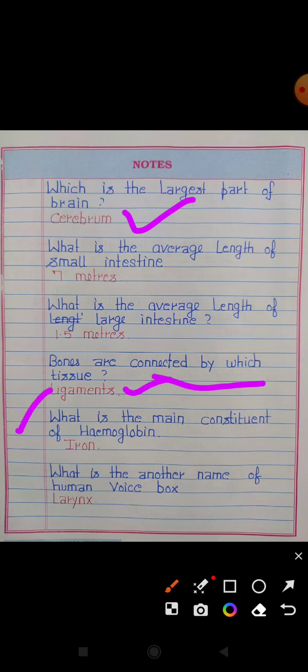What is the main constituent of hemoglobin? Answer: Iron. What is another name for the human voice box? Answer: Larynx.